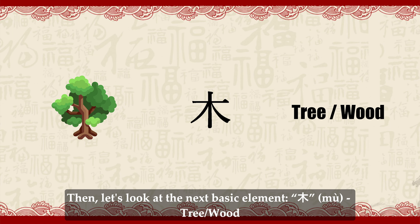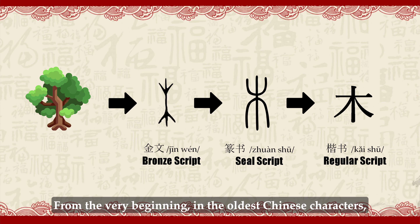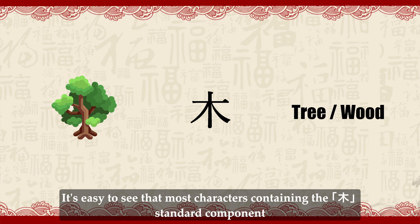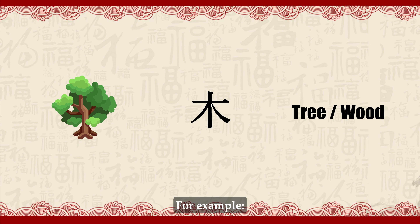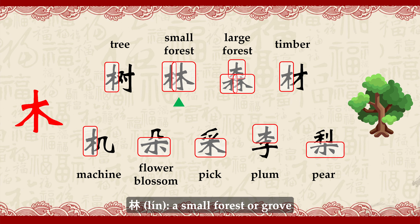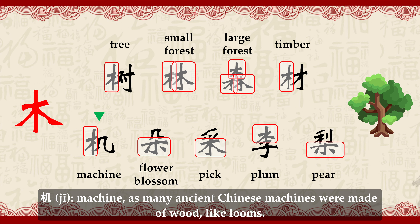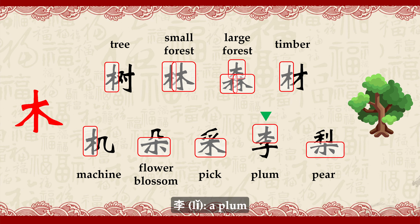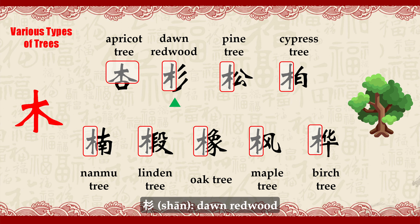Now let's look at the next basic element: Mù (木), tree or wood. As you can see from the image, Mù is also a pictographic character. From the very beginning, in the oldest Chinese characters, Mù looked like a young sapling. Over time it evolved into the modern form. The standard component for Mù keeps itself. Most characters containing the Mù standard component are related to trees, plants, or wood. For example: Shù (树), a tree; Lín (林), a small forest or grove; Sēn (森), a large forest; Cái (材), timber after trees are cut down; Jī (机), machine — as many ancient Chinese machines were made of wood.